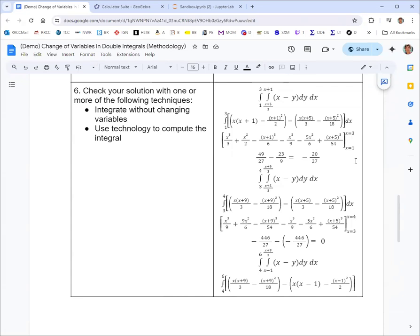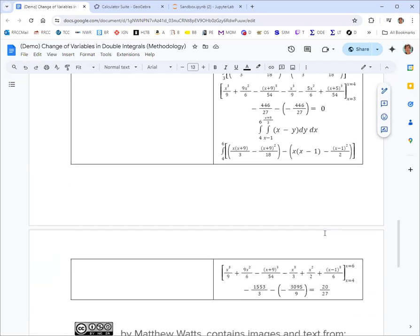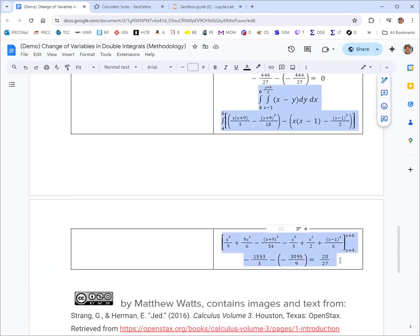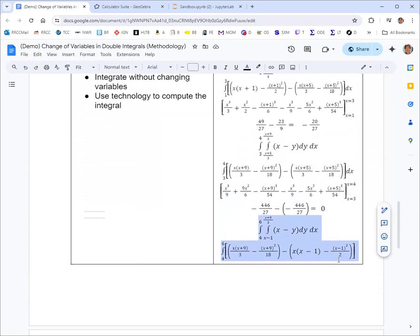And I do have the work here for us. You can see the three integrals there. The first piece gives you negative 20 over 27. The middle piece, you get 0. And then the third piece, you get positive 20 over 27. So it does give you 0.